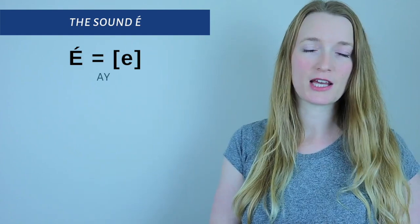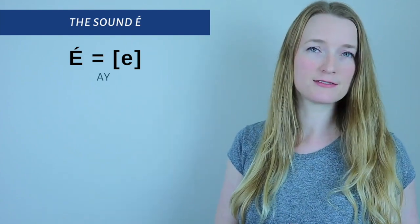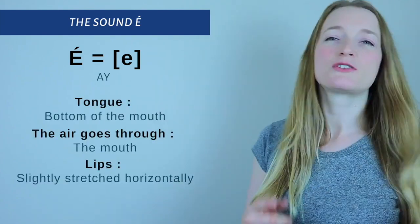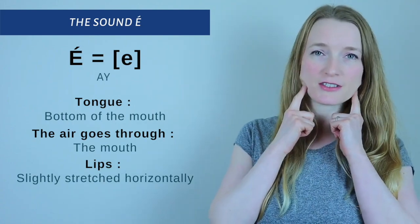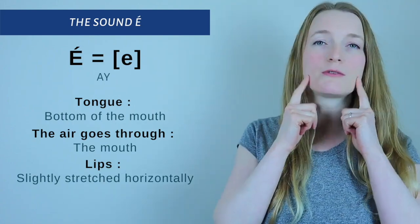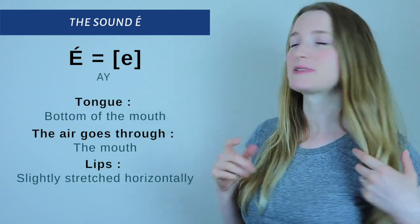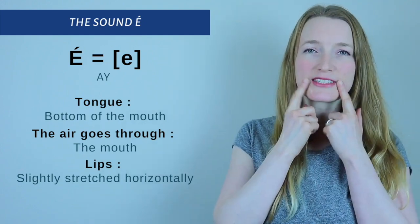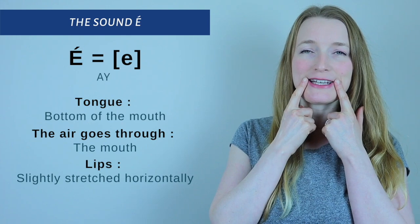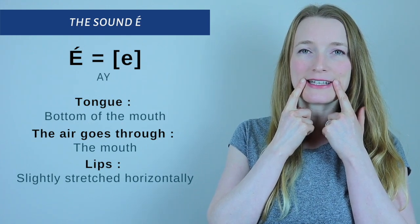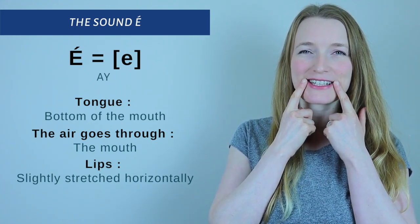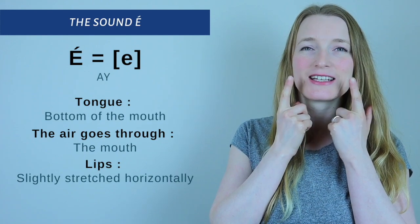For us it's very short, É. So the tongue is going to stay at the bottom of your mouth. The É goes through your mouth, not through the nose, and the lips are slightly stretched horizontally. So we have É, once again, É.